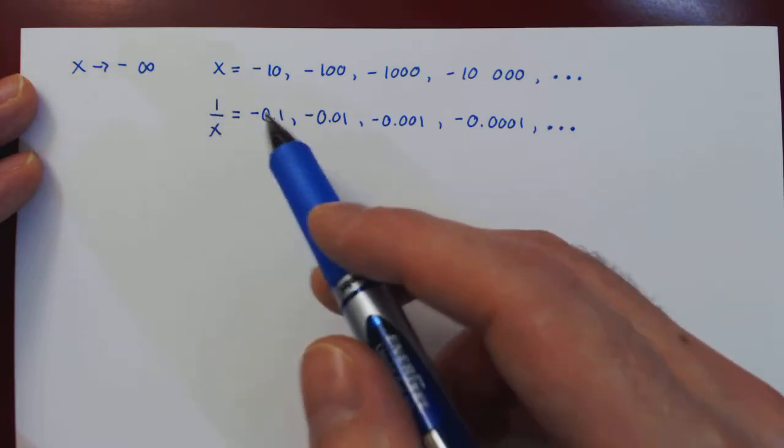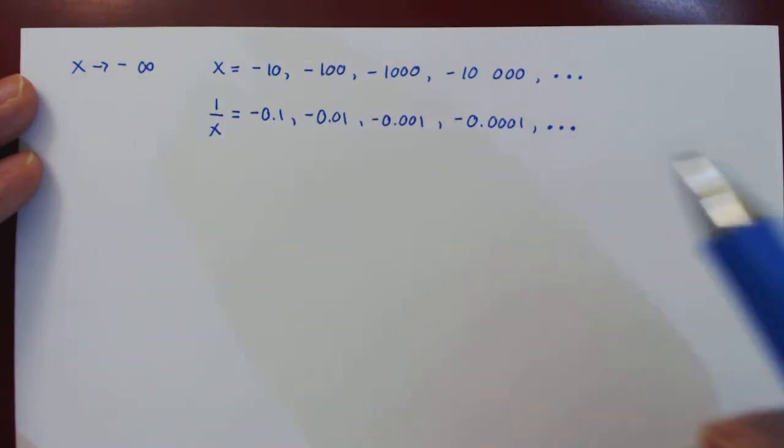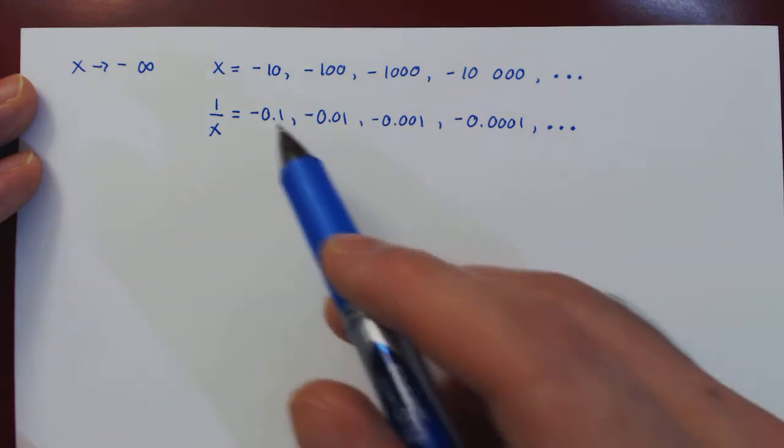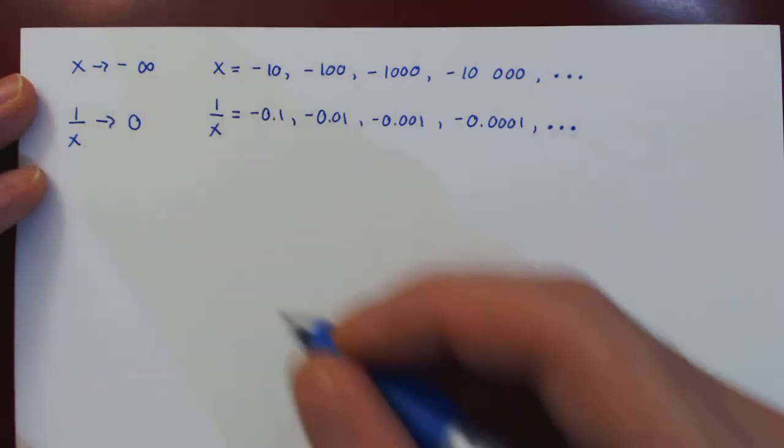So it's clear that as x gets larger and larger negatively, the reciprocal is always negative, but it's getting closer and closer to 0 from the left, but approaching 0 nonetheless. So as x goes to negative infinity, 1 over x approaches 0.